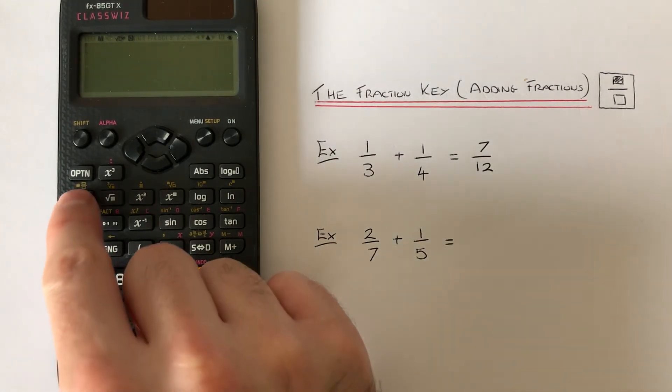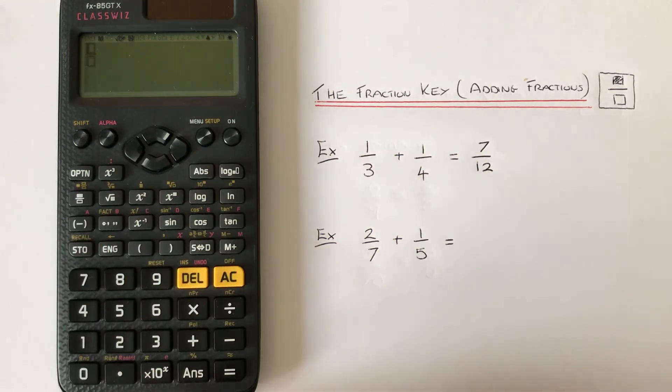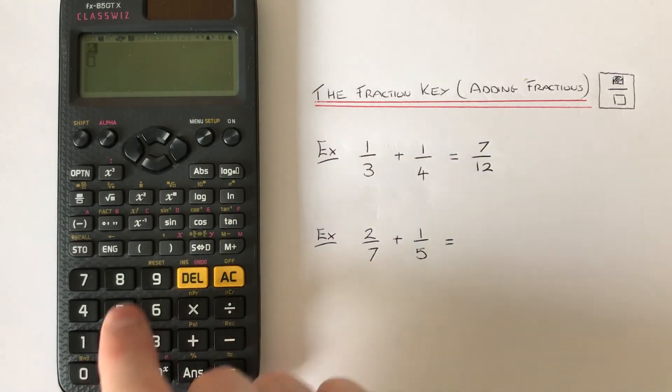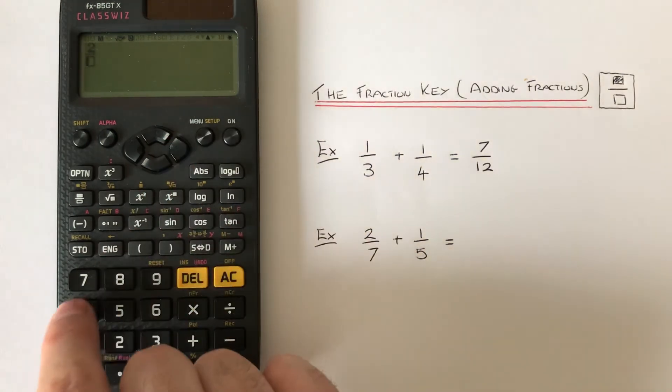Press the fraction key again, this time we have two sevenths to type in. So we go two right key seven.